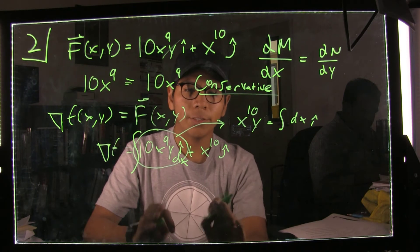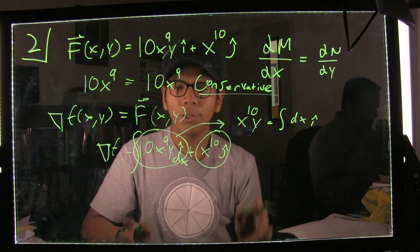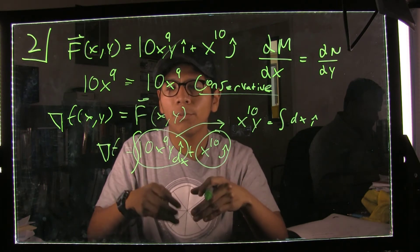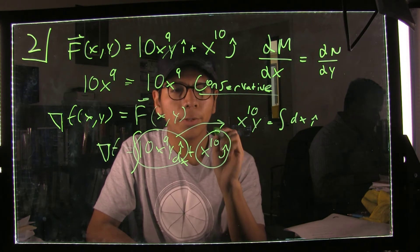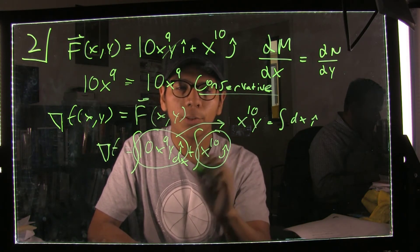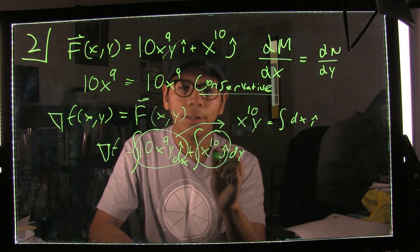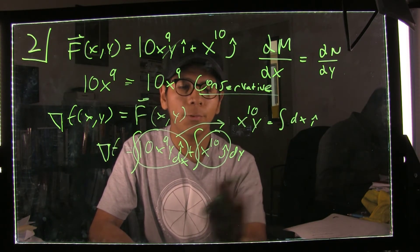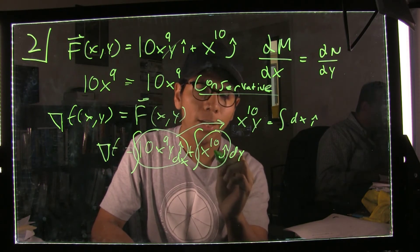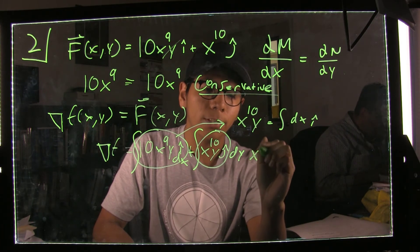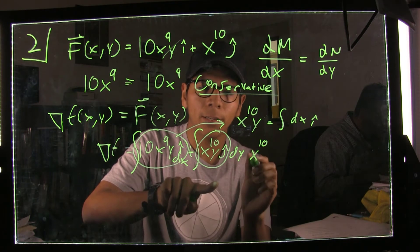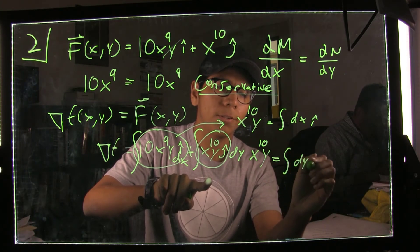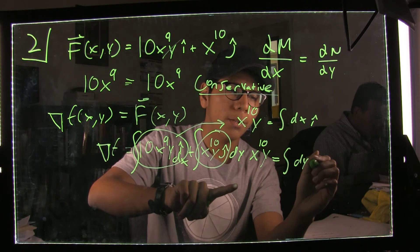Now we do the same process with the j-component. Since the gradient places the partial with respect to y into the j-component, we must integrate the j-component with respect to y. Integrating x to the 10th with respect to y — since x is treated as a constant — we just add a y, giving us x to the 10th times y.